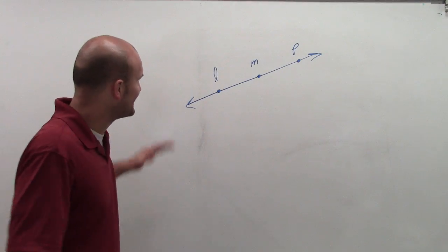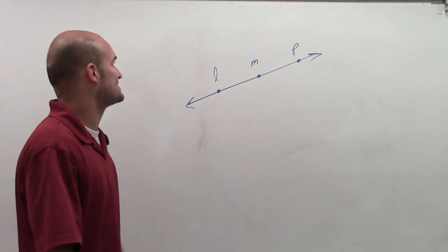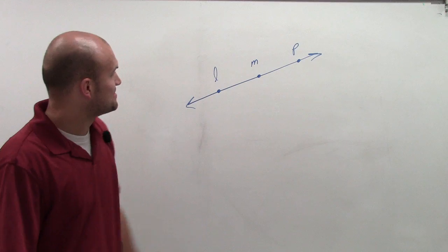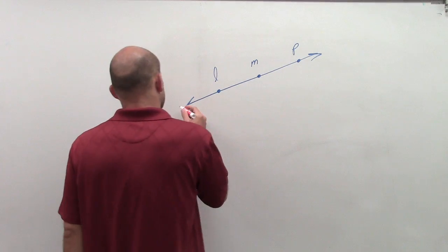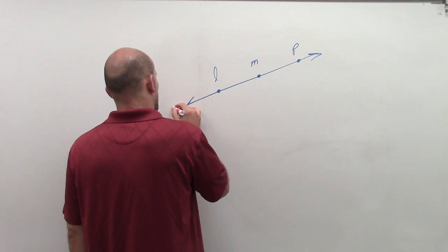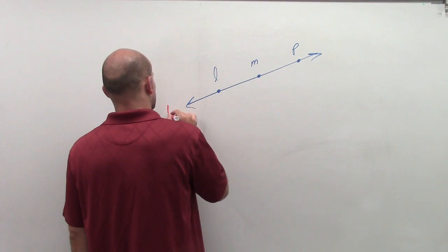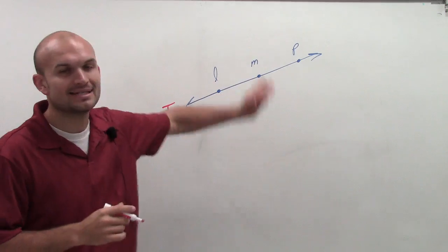What we have here is a line, and this line can have many different names. Let's call this line T. Here's our line T.